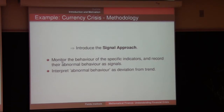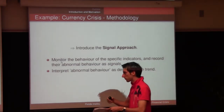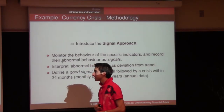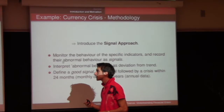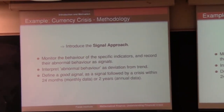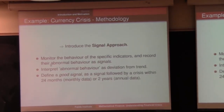We interpret abnormal behavior as deviation from trend. You look at specific indicators, observe how they behave over time, and if something abnormal occurs — very high or very low values — that becomes a signal. A good signal is one followed by a crisis within 24 months if you have monthly data, or two years if you have annual data.